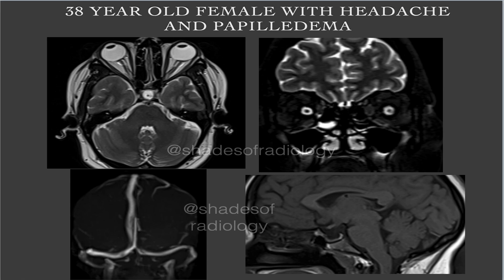This is the axial T2-weighted MR image at the level of orbits. This is the coronal T2 fat-sat image of orbits, this is the MR venogram, and this is a sagittal T1-weighted image. You can pause the video for a while, have a look at the findings, and come to a conclusion based on the findings.